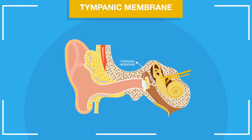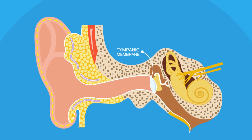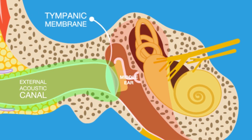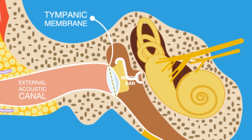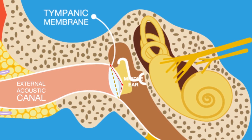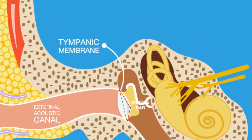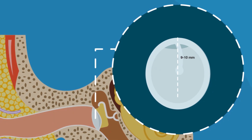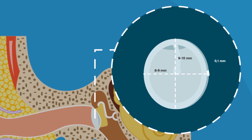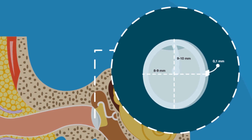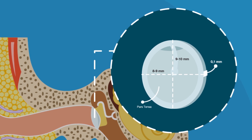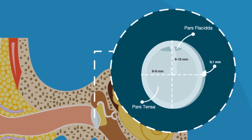The tympanic membrane, or the drum head, forms the partition between the external acoustic canal and the middle ear. It is obliquely set, and as a result, its posterior superior part is more lateral than its anteroinferior part. It is 9 to 10 mm tall, 8 to 9 mm wide, and 0.1 mm thick. The tympanic membrane can be divided into two parts: Pars tensa and Pars flaccida.